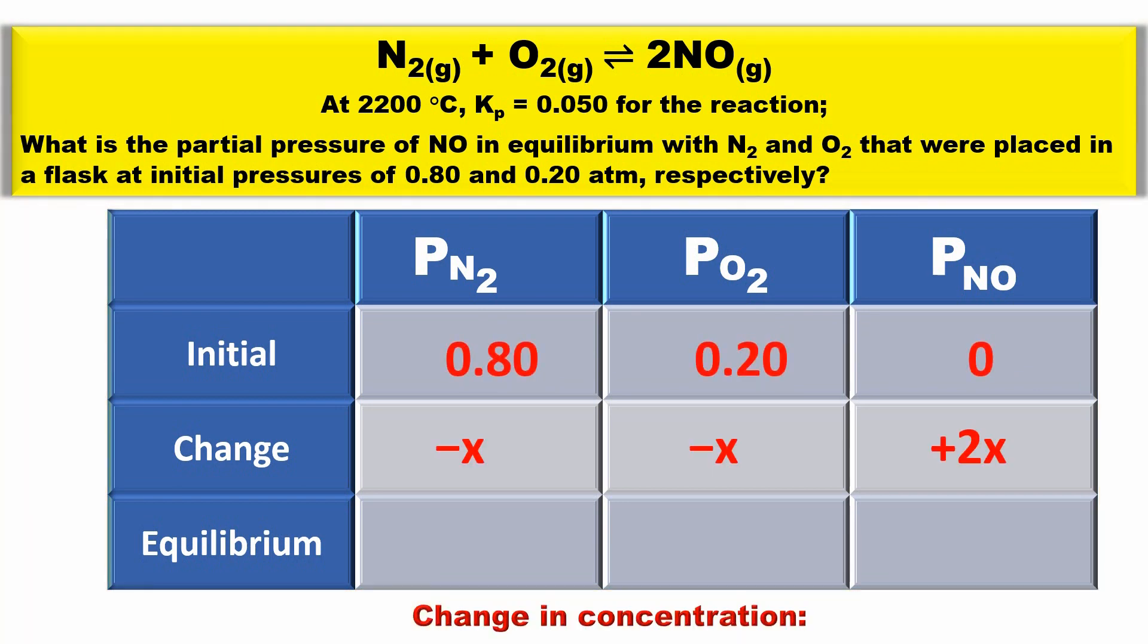The change is indicated by x's where the reactants will be disappearing. So we write negative x for both N2 and O2. The products, the nitrogen monoxide, will be forming. Therefore we write a plus sign. In this particular case we write plus 2x because in the balanced chemical equation the coefficient in front of NO is 2.